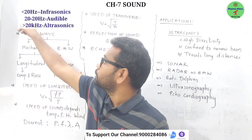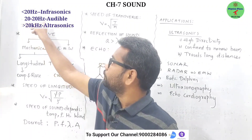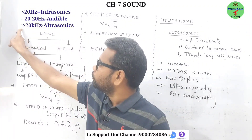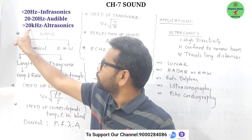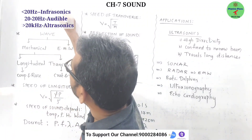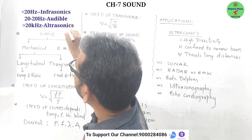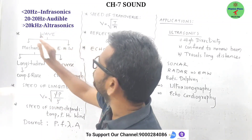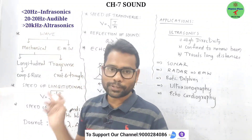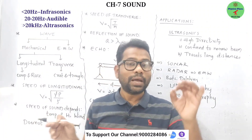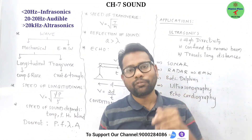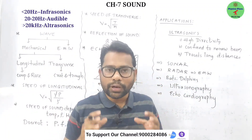Sounds with a frequency less than 20 Hz are called infrasonics. Sounds with a frequency greater than 20,000 Hz are called ultrasound. These sounds we cannot hear. The audible range of sound is only 20 Hz to 20,000 Hz.